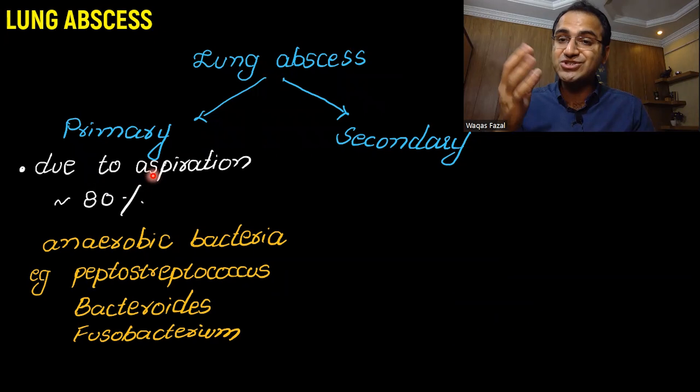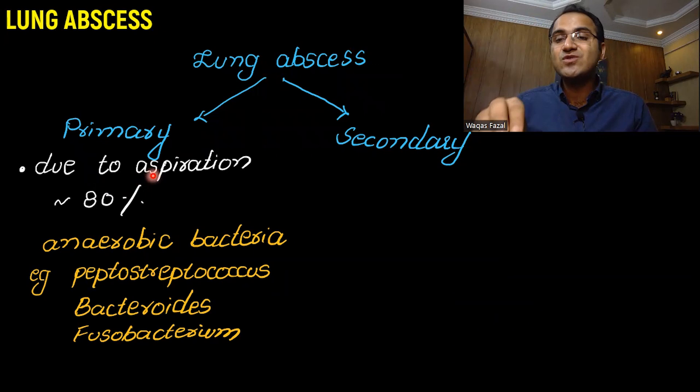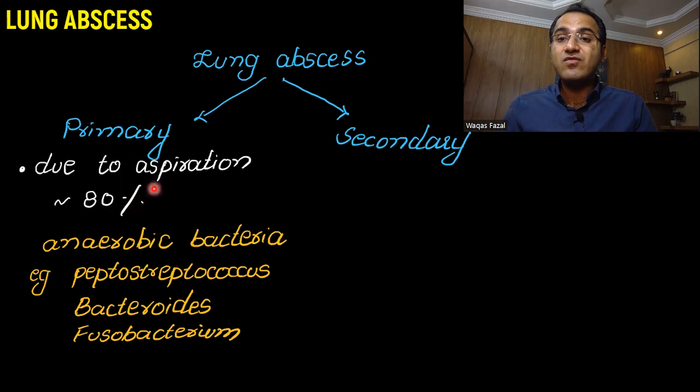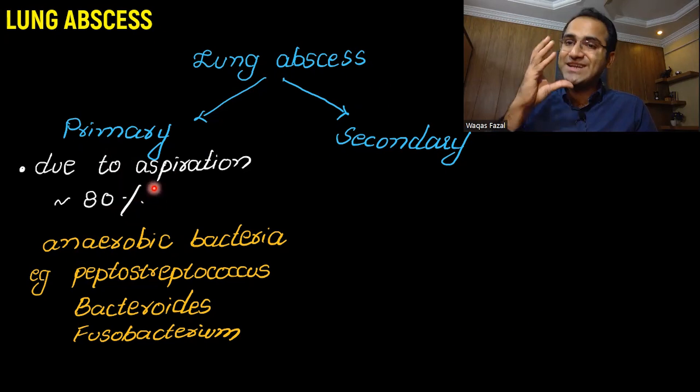Aspiration usually occurs in patients who are either comatose, stroke patients, or those who have a weak gag reflex and cannot protect their airways. The oropharyngeal bacteria get inside the lungs, proliferate there, resulting in formation of necrotic abscess and pus formation. 80% of lung abscess cases occur due to aspiration.